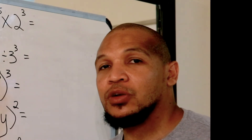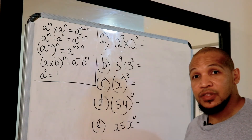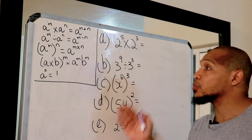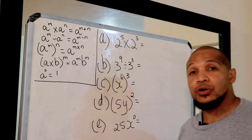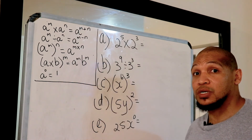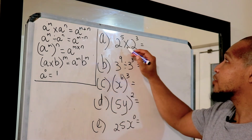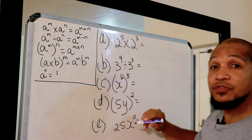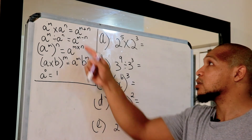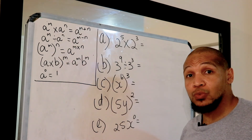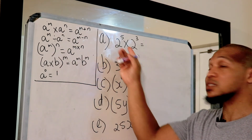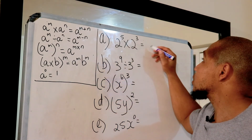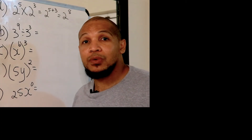Let's look at the following examples — I've written everything out and for each example we'll refer to the rules in this box. First: two to the power of five times two to the power of three. That would be rule one — same bases, we multiply so we add the exponents — giving us two to the power of eight.